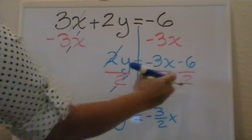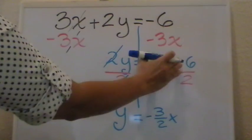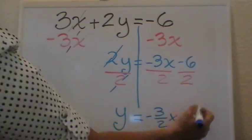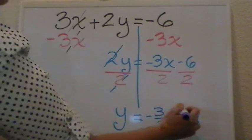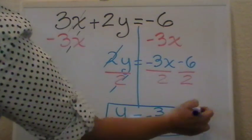And then I have negative 6 divided by 2. Negative divided into a positive equals a negative. 6 divided by 2 is 3. And this will be my final answer.